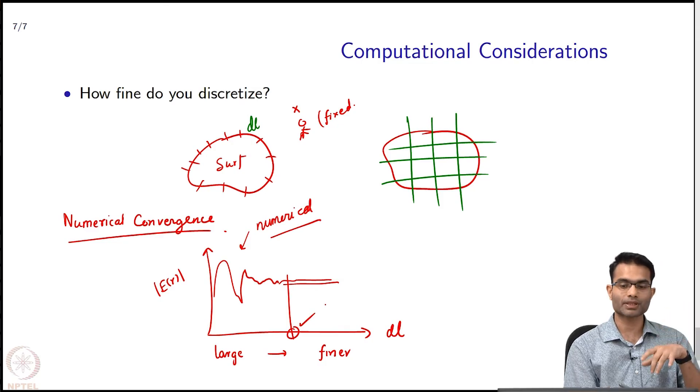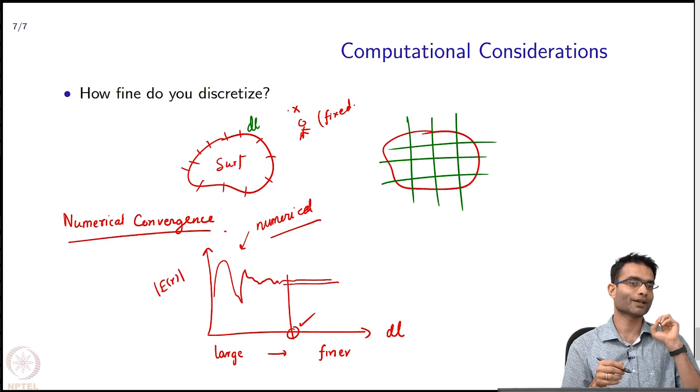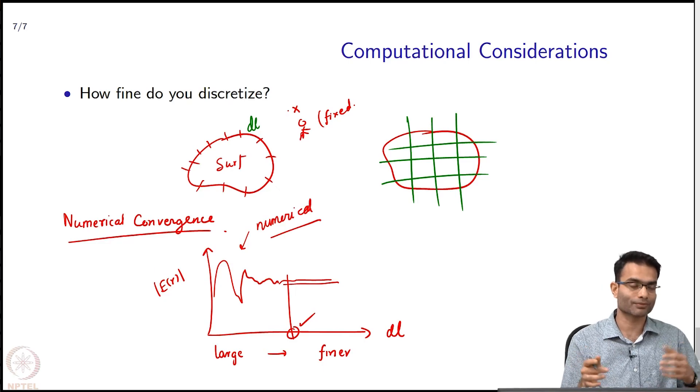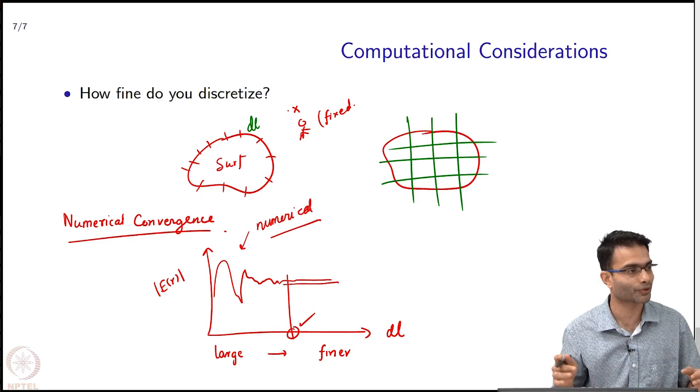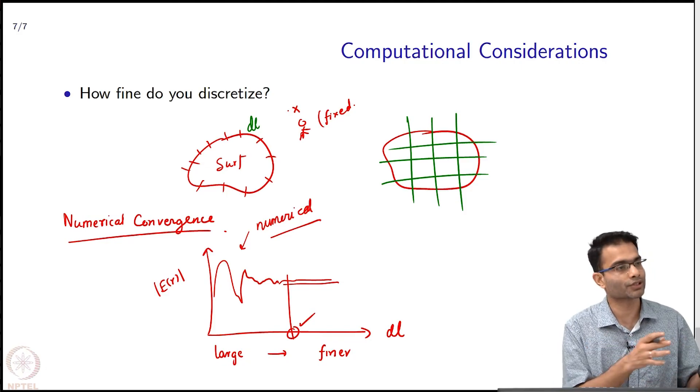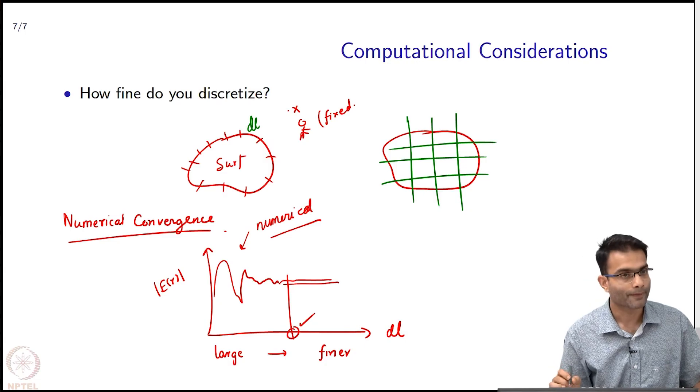Why? Because it could happen that by mistake you chose a point which is actually a field node where the field value goes to 0. Then you will keep thinking how is it that my code is giving - I mean that is also valid, but you might wonder if there is something entirely wrong with your code that is giving you 0. So pick a few points and it should converge, and then that is your value of DL.